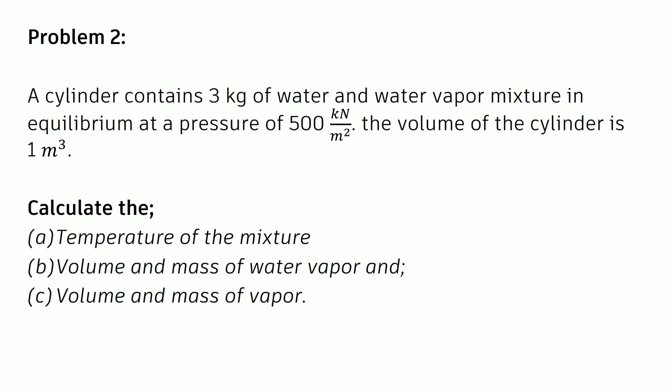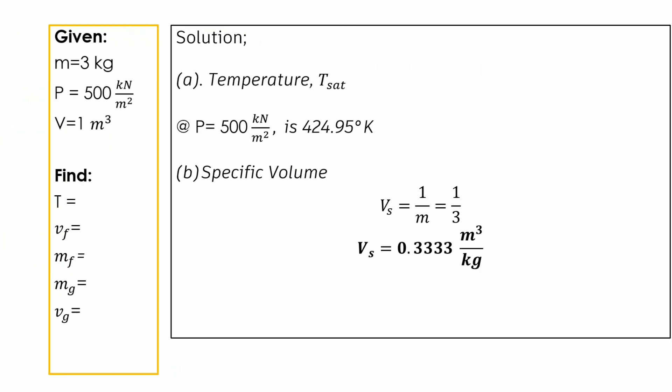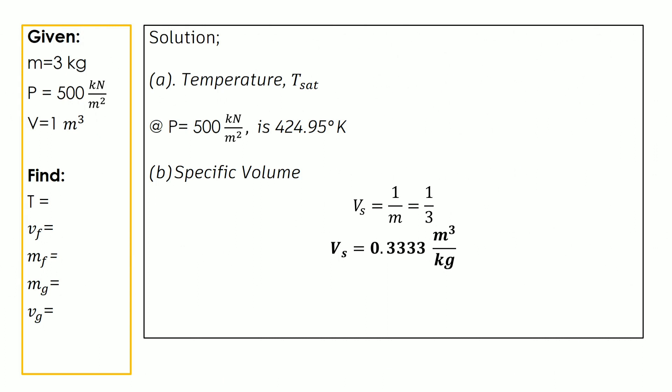We are tasked to calculate the temperature of the mixture, the volume and mass of the water, and the volume and mass of the vapor. Before jumping into the solution, let us list the given values: mass is three kilograms, pressure at equilibrium is 500 kilonewtons per square meter, and the volume of the cylinder is one cubic meter.